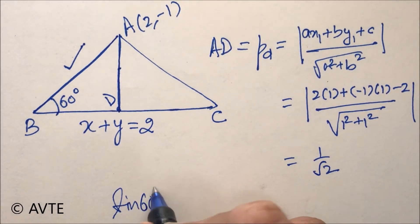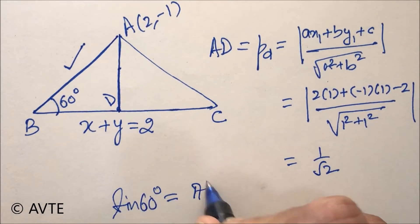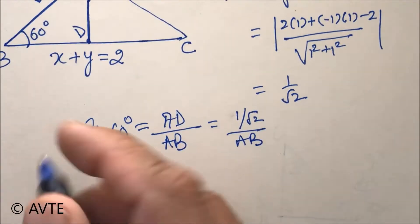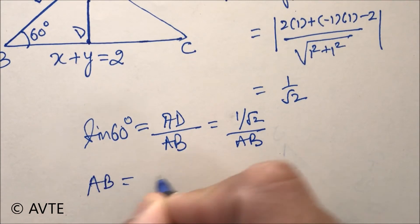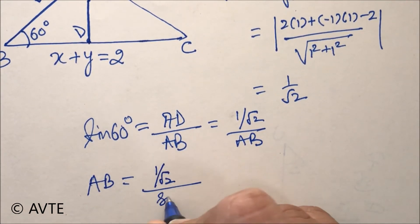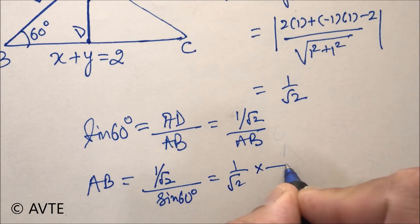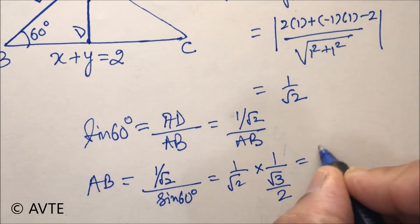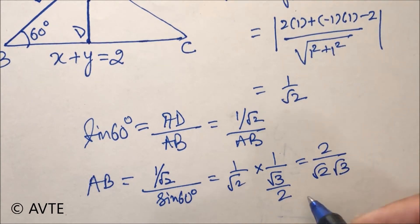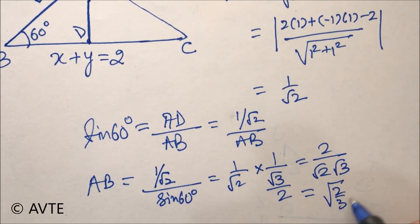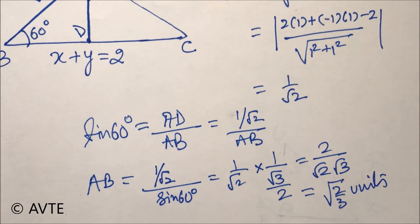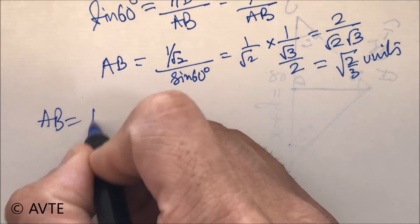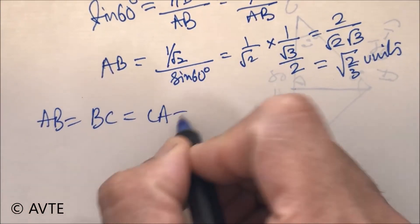Now, sine 60 degrees equals root 3 by 2. Using this, we calculate AB. The answer comes as each side — AB equals BC equals CA — all sides are equal.